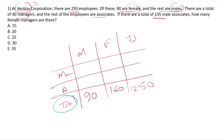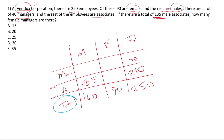Total managers are 40. If there are 135 male associates — wait, let me check. Female is 90, male is 160. Total managers 40, total associates 210. Male managers: 160 minus 135 equals 25. So female managers equals 40 minus 25 equals 15. The answer is 15 female managers.